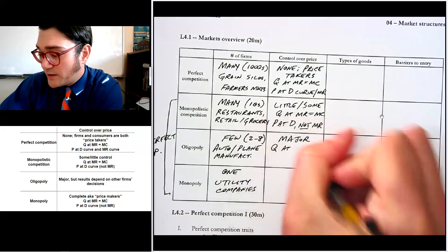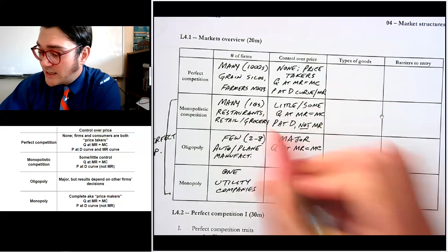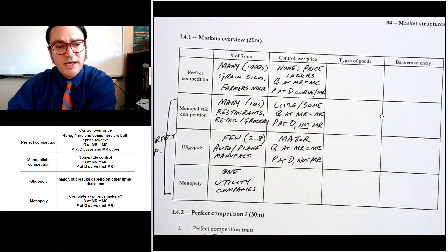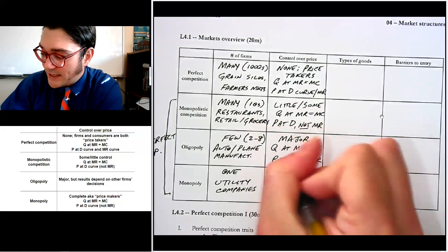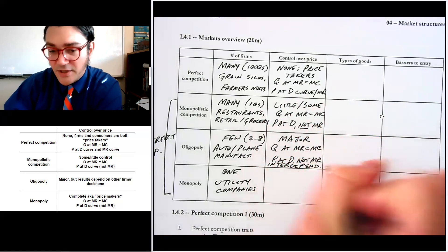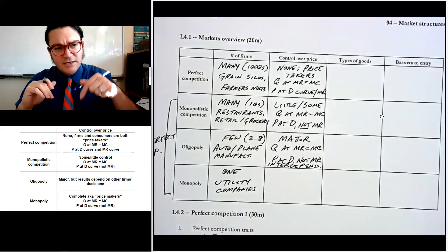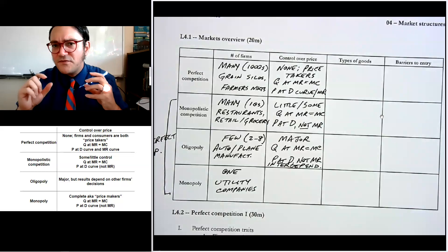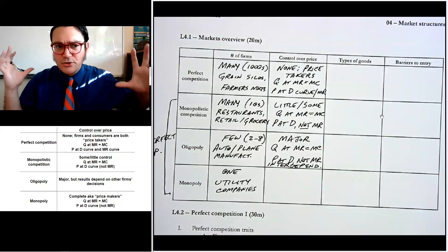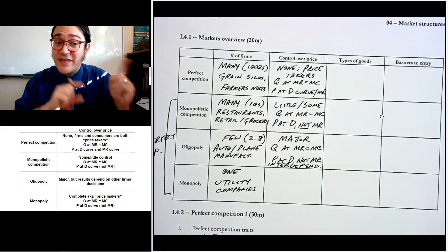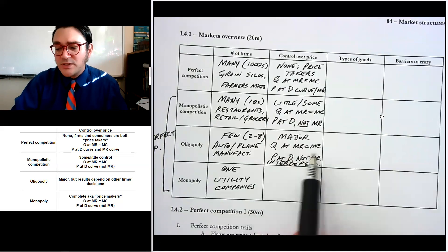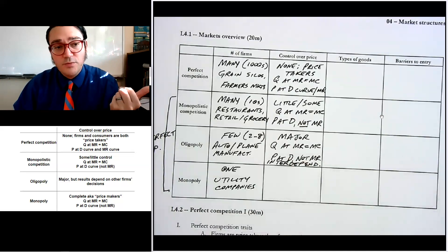Oligopolies have pretty major control over their prices. They produce at the quantity where MR equals MC — notice the pattern — and they price at the demand curve, not marginal revenue. They also typically have interdependence, meaning their decisions are often dependent on what other companies do. If Boeing decides to produce a great new airplane, Airbus has to make a decision based on that because they are interdependent. So the prices they charge and quantities they produce are sometimes affected by the other party.